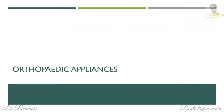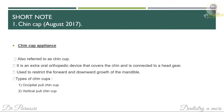The next topic is orthopedic appliances. The first short note is the chin cap, also called the chin cap. It is an external orthopedic appliance that covers the chin and is connected to the headgear, from which we derive anchorage. It is used to restrict the forward and downward growth of the mandible. There are two types: occipital pull head chin cap and vertical pull chin cap, based on where the headgear is connected.